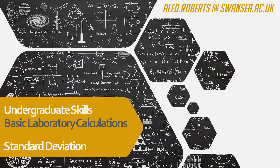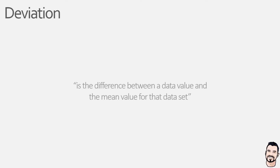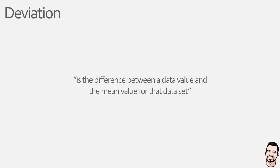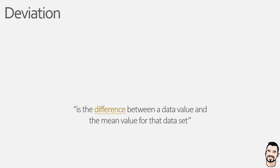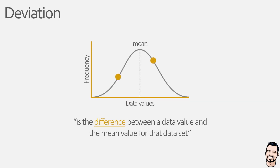So before we look at the standard deviation we need to understand what we mean by the term deviation. On a very basic level, deviation is a term we use to describe the difference between an individual data value and the mean value of the data set. Here we can see two data points in yellow and the deviation is the numerical difference between the data value and the mean value.